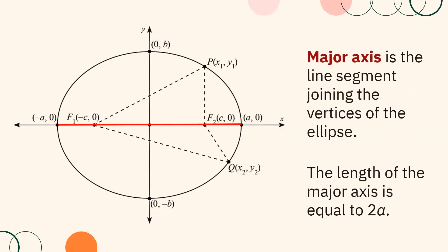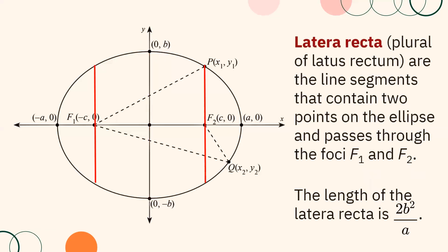The major axis is the line segment joining the vertices of the ellipse, and its length is equal to 2A units. The minor axis is the line segment joining the co-vertices of the ellipse, and its length is equal to 2B units. Lateral recta — the plural of latus rectum — are the line segments that contain two points on the ellipse and pass through the foci F1 and F2. The length of the latus rectum is 2B squared over A units.